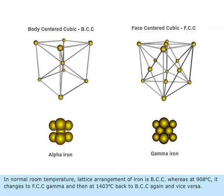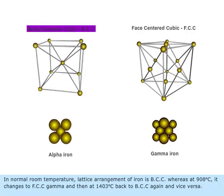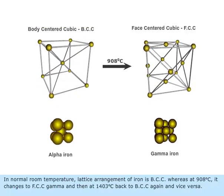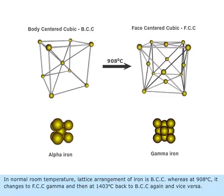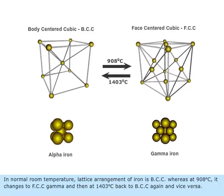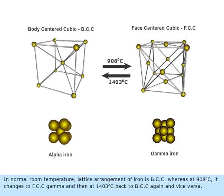At normal room temperature, the lattice arrangement of iron is BCC, whereas at 908 degrees centigrade it changes to FCC gamma, and then at 1403 degrees centigrade back to BCC again, and vice versa.